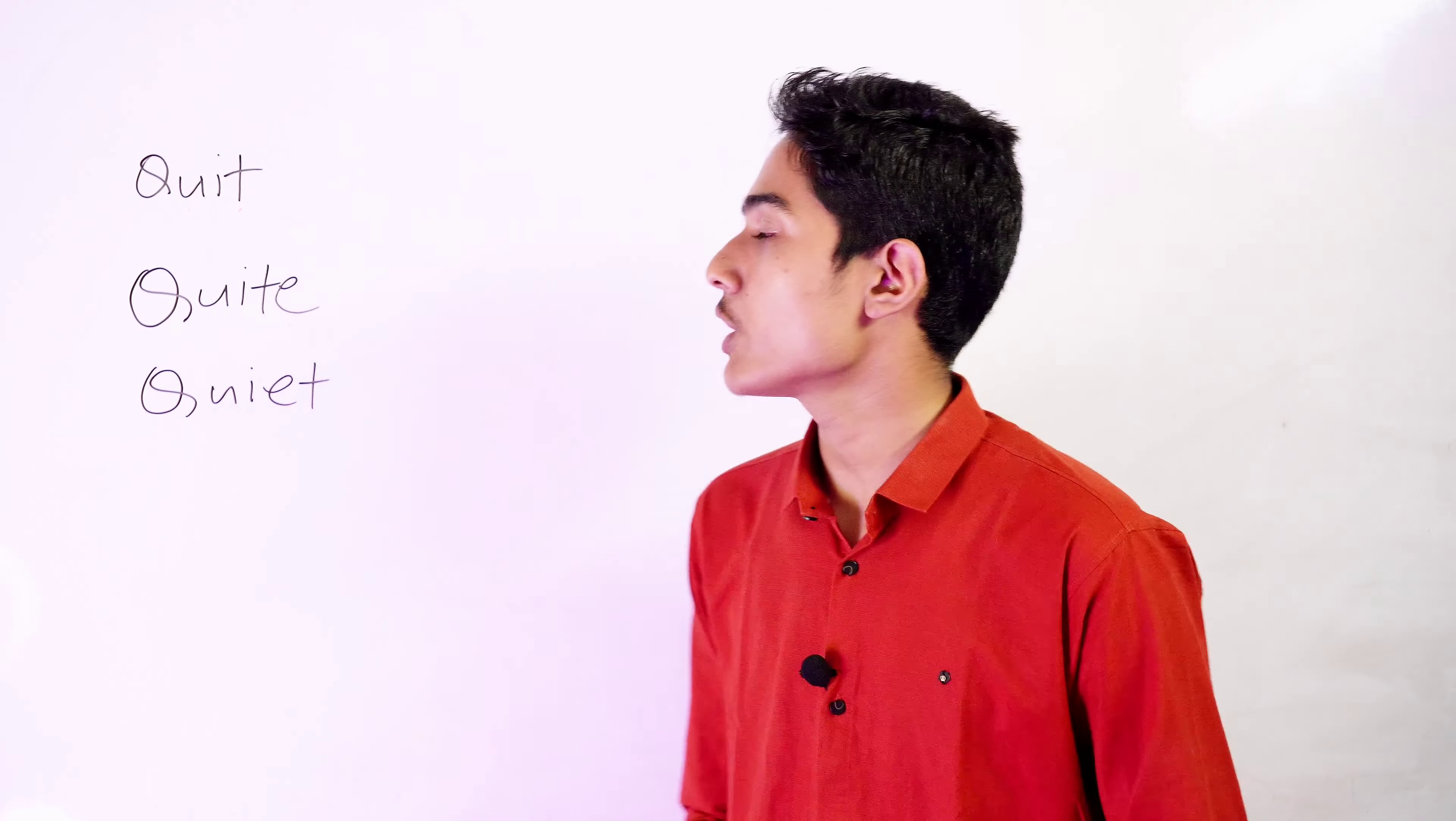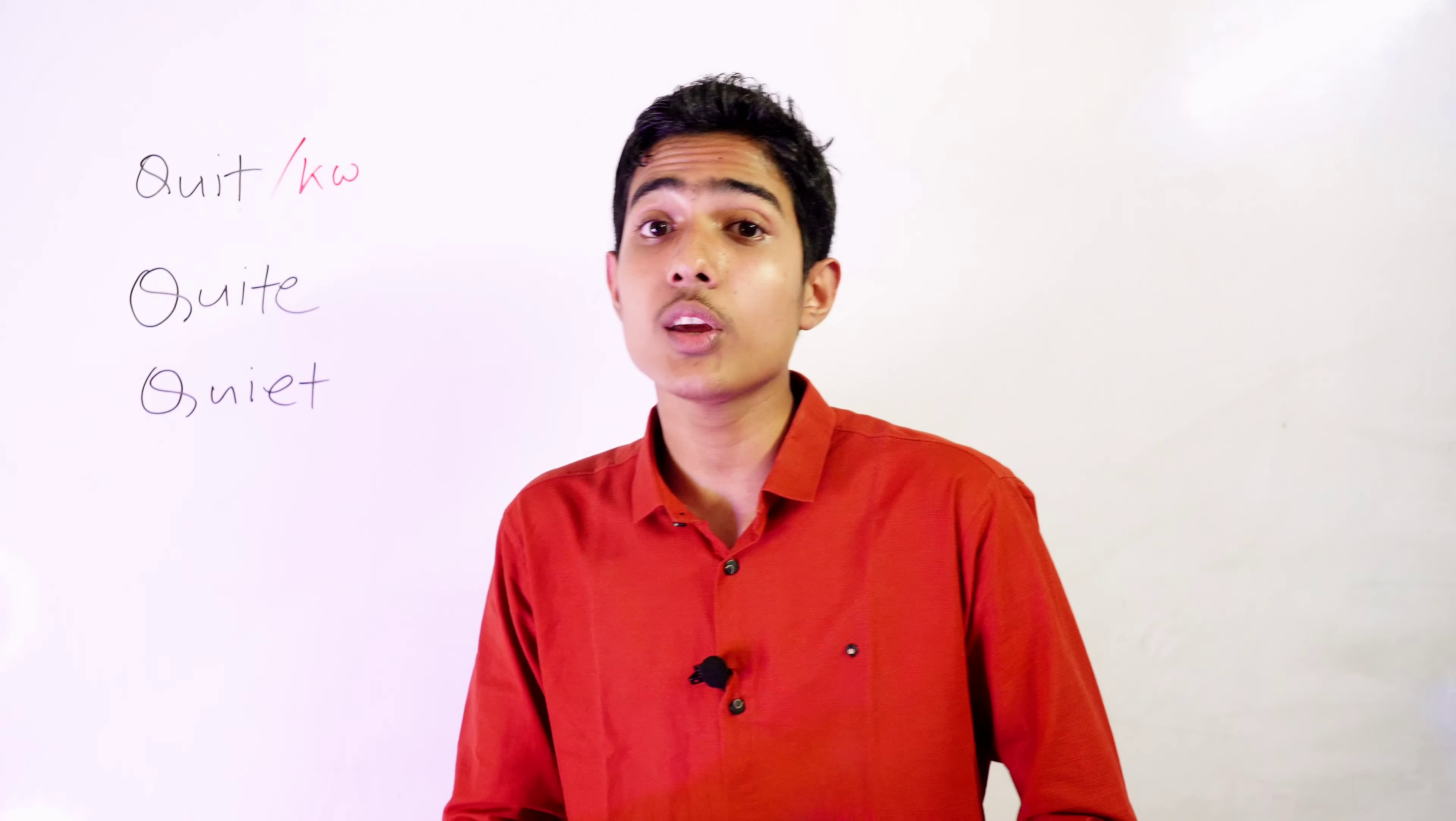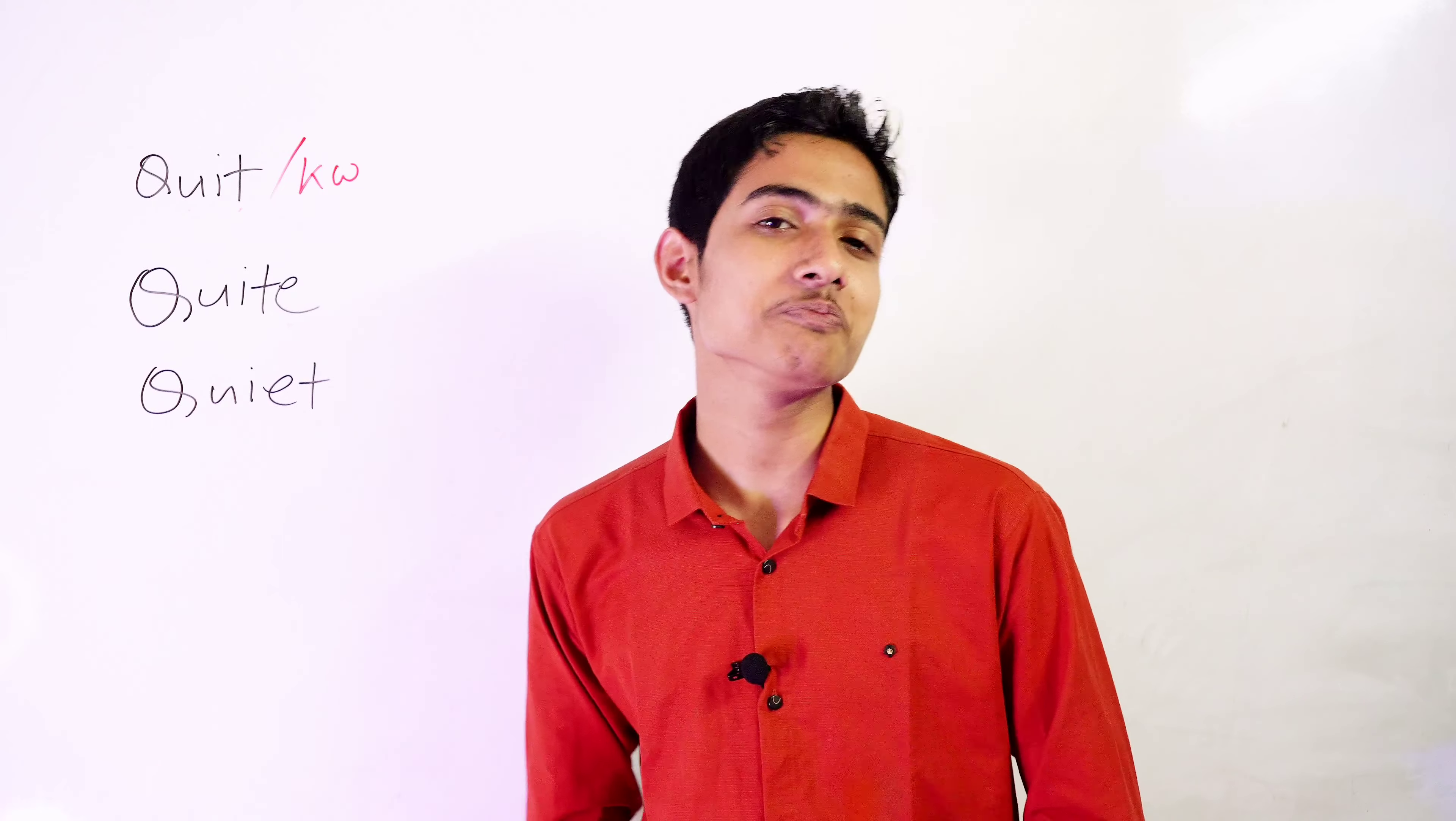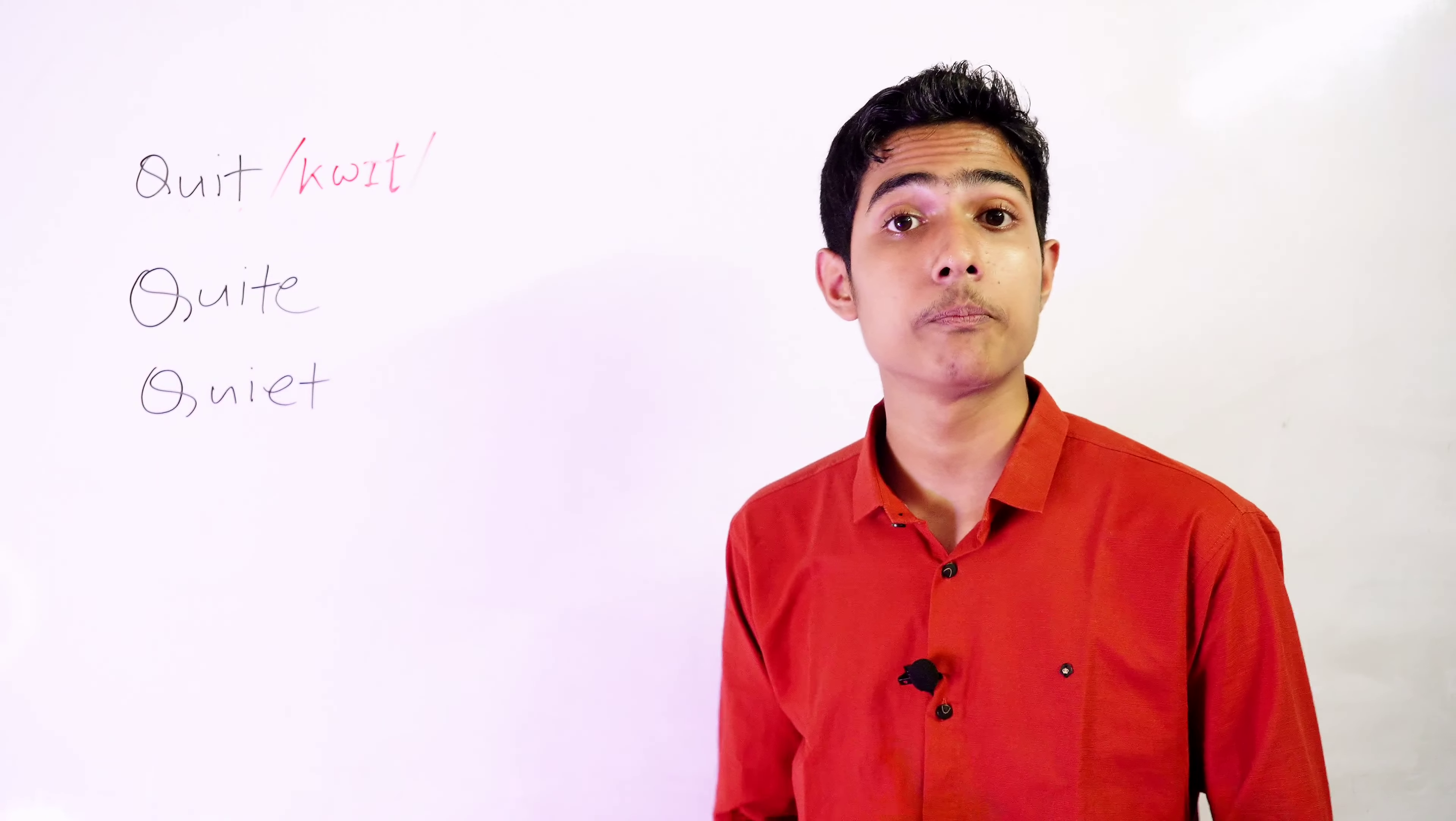The word quit starts with a K sound and then W. It's a consonant cluster. You might have a question: what does consonant cluster mean? A consonant cluster is a combination of two or more consonant sounds that work together. I don't want to go into detail right now because this is a bit complicated, so I'll make a special video about consonant clusters later. After this consonant cluster, there's a short vowel and it ends with an unvoiced consonant sound. This is pronounced as quit.